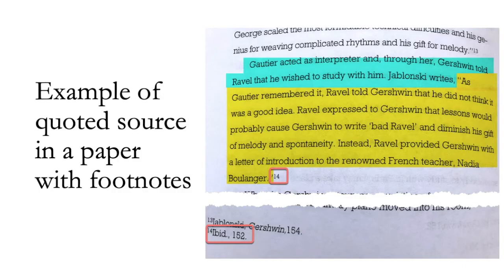Here is an example of a quoted source in the context of a research paper that uses footnotes in Chicago style. As you can see, the section highlighted in yellow is a direct quote, which is evident because it's surrounded by quotation marks. The writer has set up this quote in their own words, highlighted in blue. This introduction orients the reader so that we understand why the quote is significant and how it ties into the paper. Finally, you'll see that there is a reference number after the quote, which leads to the shortened citation at the bottom of the page.